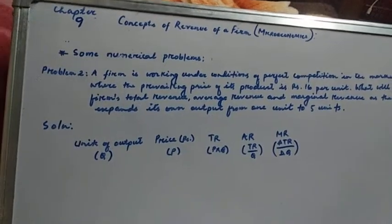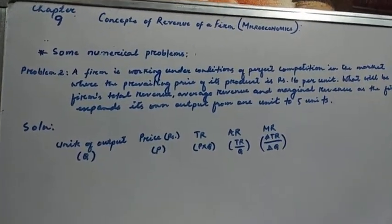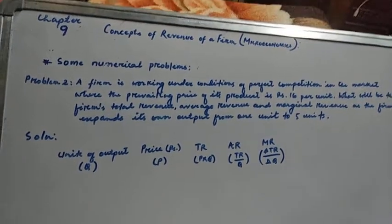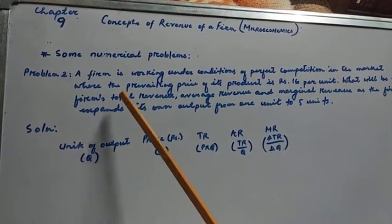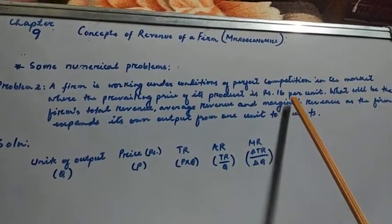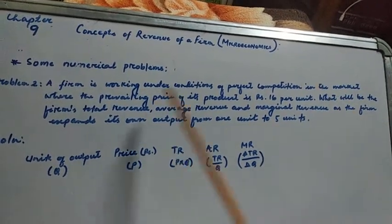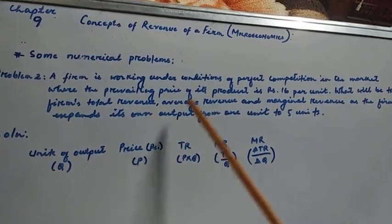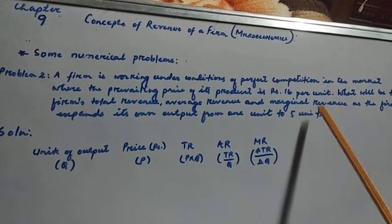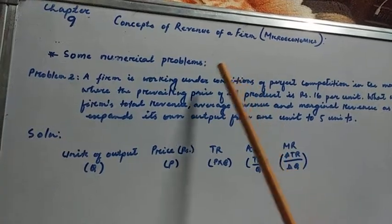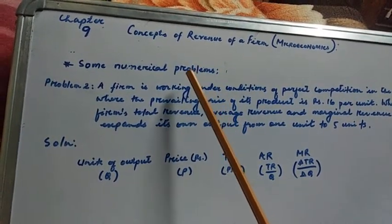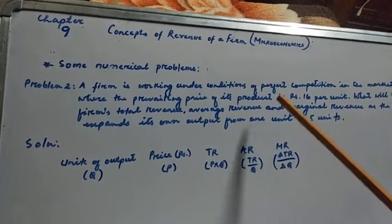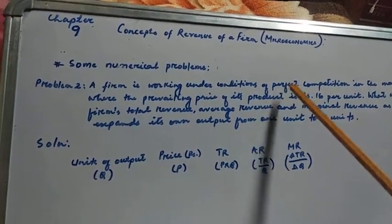Problem number two deals with perfect competition. A firm is working under a condition of perfect competition where the prevailing price of its product is rupees 16 per unit. We have to find the firm's total revenue, average revenue, and marginal revenue as it expands output from one to five units. Under perfect competition, the price remains constant at rupees 16.